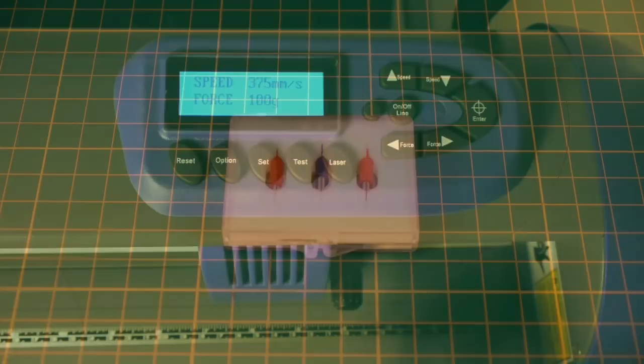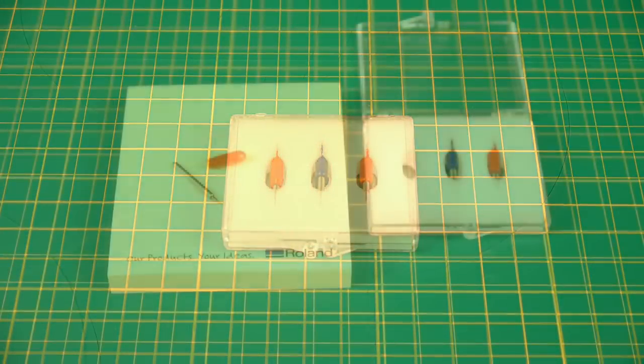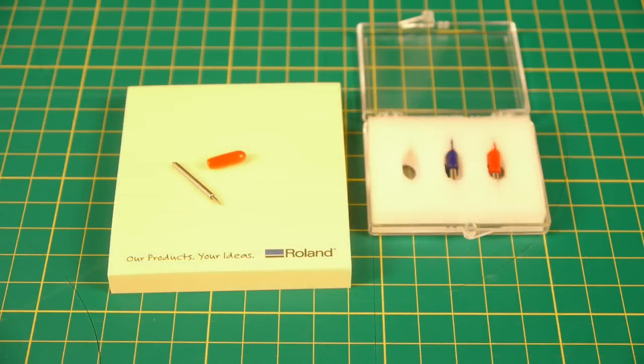Next, let's get our blade holder set up properly. If your cutter came with a three pack of blades, open the blade pack and remove a blade from the foam backing material. Then remove the red rubber protective cap.